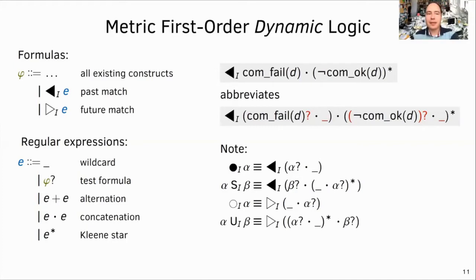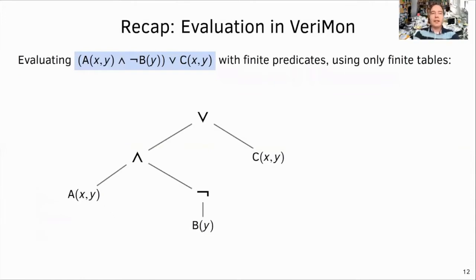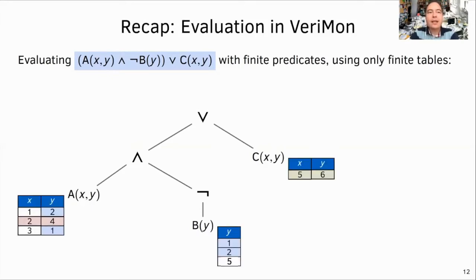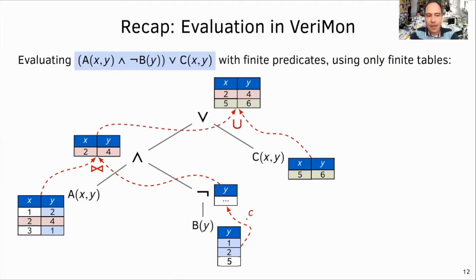I see. And how do you evaluate the regular expressions in your monitor? That's a good question. Let's extend Verimon's evaluation algorithms in Isabelle. For most, we would like to ensure that the algorithm is correct, right? Let me quickly recap the main idea behind Verimon's evaluation algorithm first. To evaluate this formula, AXY and not BY or CXY over finite predicates A, B, and C, Verimon keeps finite tables of satisfying valuations for each sub-formula. The evaluation starts with tables at the leaves, which are read from the log, and table columns in this case correspond to three variables of the sub-formula they're referring to.